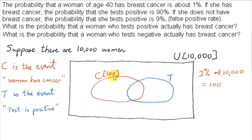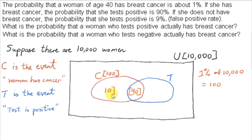On average, how many of these women will test positive? We see that 90% of the women who have breast cancer test positive — 90% of 100 is 90. So there are 90 elements representing the 90 women who have cancer but test positive. The remainder must be 10 — so 10 women have cancer but test negative.